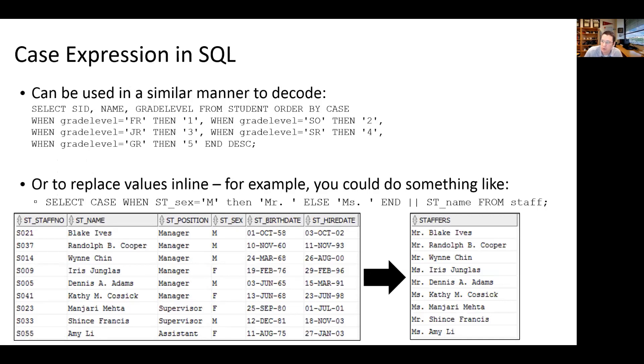For example, we could do something very similar to what we had in our DECODE expression. In this case, we're selecting student ID, name, grade level from student, order by, and now here starts our CASE expression. When grade level equals FR, then the resulting value will be 1; when grade level equals SO, then the resulting value will be 2, and so on down the line. This is going to give us the exact same output that our DECODE gave us before.